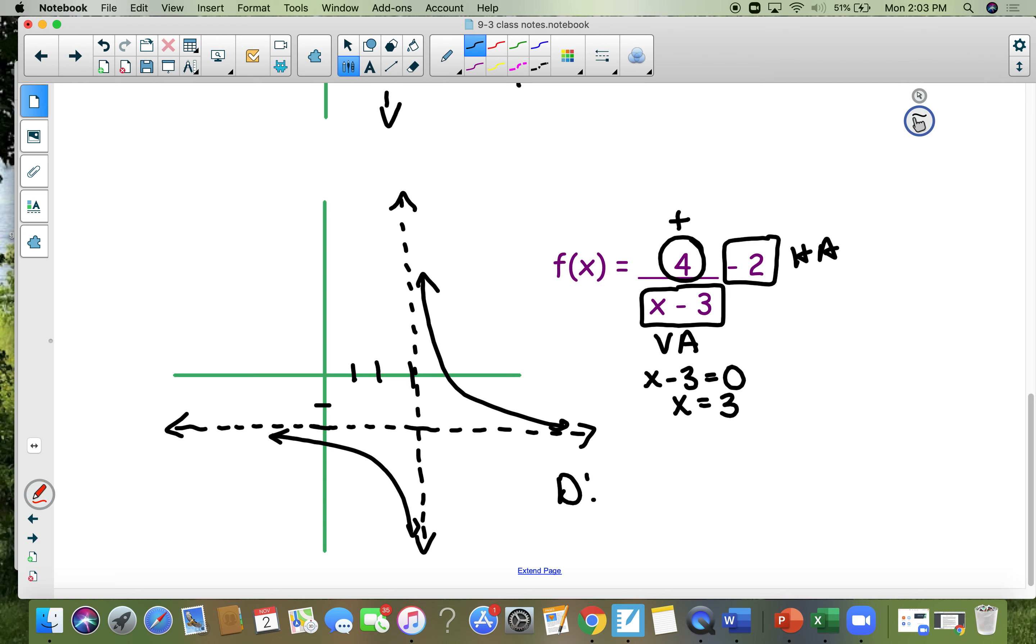The domain is everywhere from negative infinity to positive infinity of graph. Everything is shaded in except at x equals 3 because there's a dotted line. And the range is everything from negative infinity to positive infinity except at y equals negative 2. Horizontal has the letter y attached to it. The vertical has the letter x attached to it. And the domain are the x values and the range are your y values. Okay, one last problem.